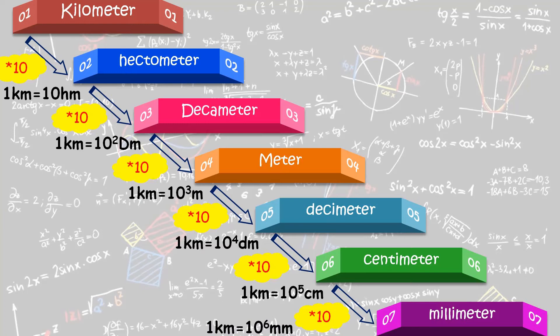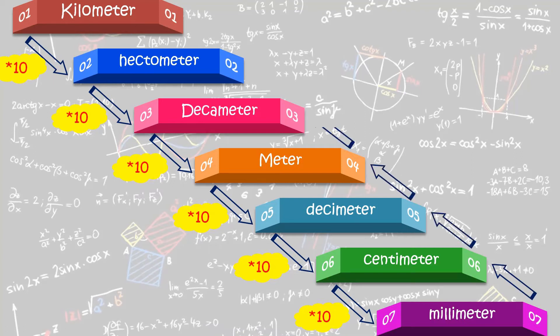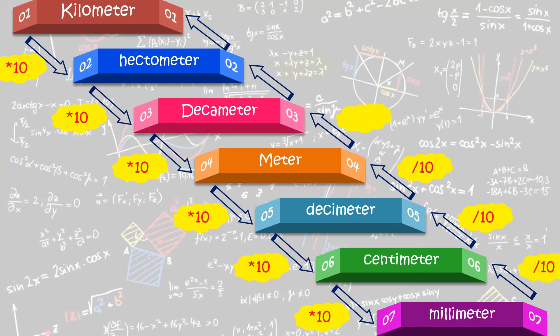Here you must have observed that we multiplied by 10 at every step. Now if you want to go in the reverse manner, that is, if you want to convert a unit of quantity from millimeters to kilometers, then you need to divide by 10 at each step. Now let's convert all the units into millimeters.